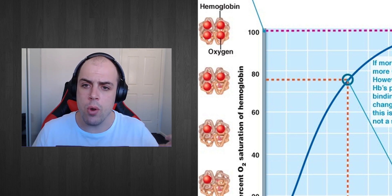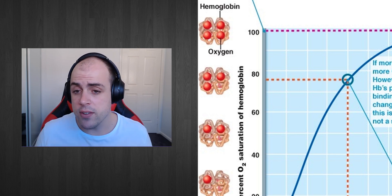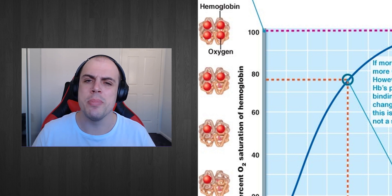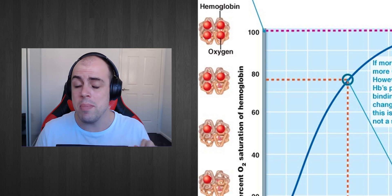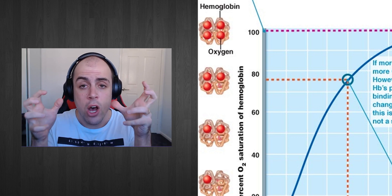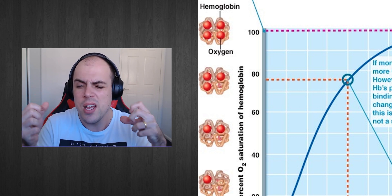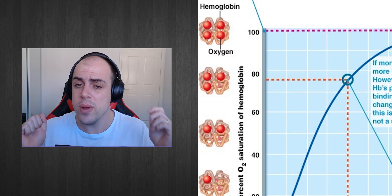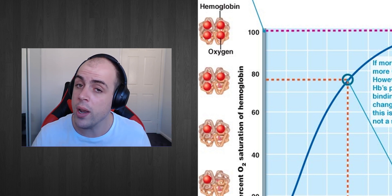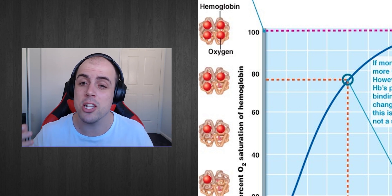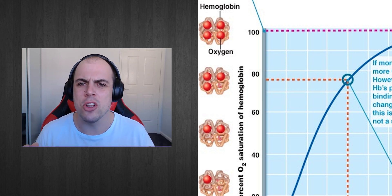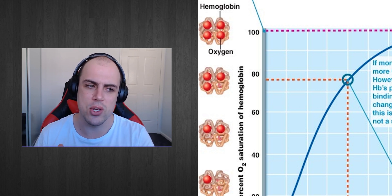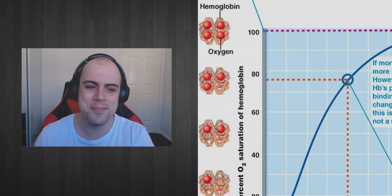In our next video, I want to explore what happens when hemoglobin gets to the tissues. What we've effectively done is put hemoglobin in its R-state, so it has a very high affinity for oxygen and is holding on to those oxygen molecules and doesn't want to let go. So next time we'll explore how we can persuade hemoglobin to release those oxygen molecules at the tissues.